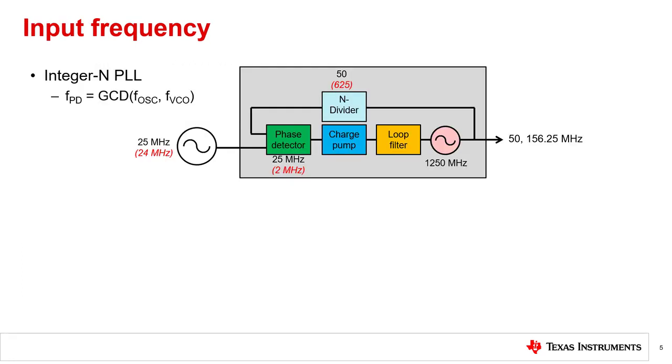In order to generate clean output clocks, the PLL loop filter bandwidth should be as wide as possible. Usually, the loop bandwidth will be higher than 100 kilohertz. In general, for a wide loop bandwidth filter, the phase detector frequency should also be high. Another benefit of having higher phase detector frequency, the N divider will be smaller, which has a nice result of reducing the PLL noise.